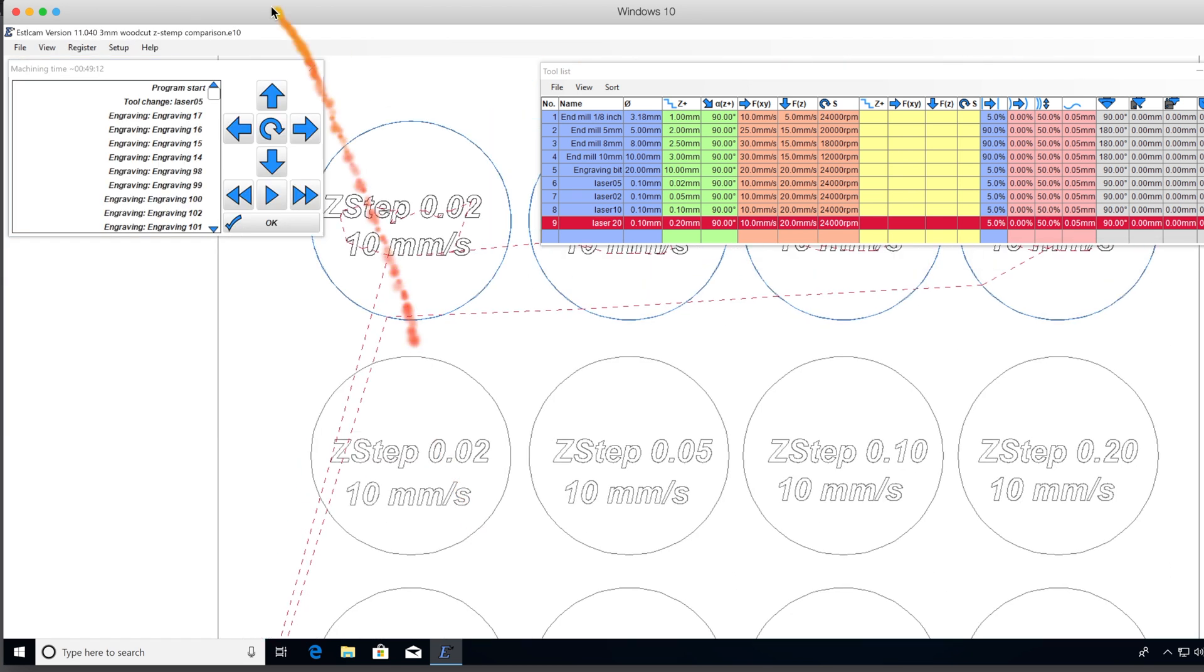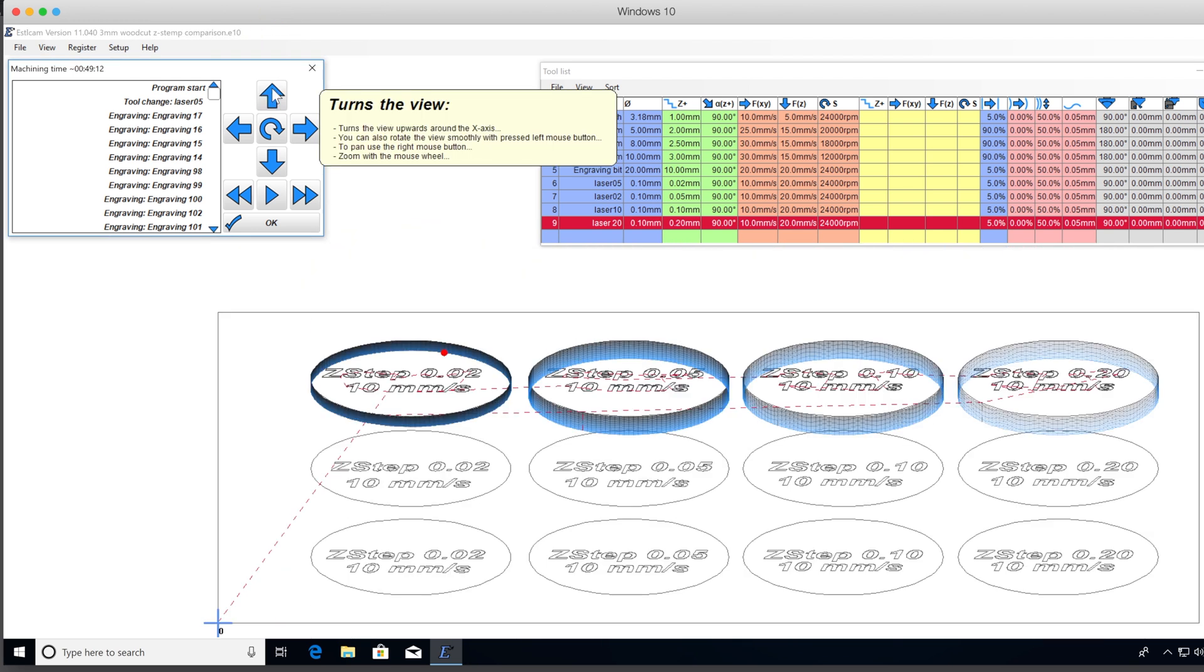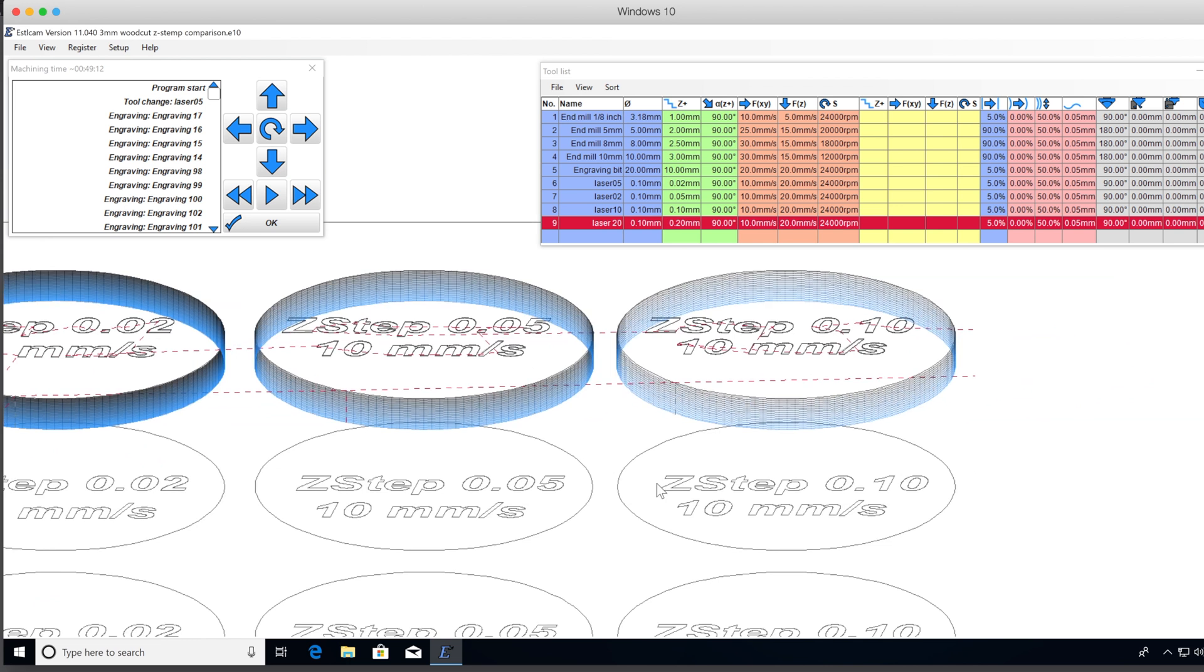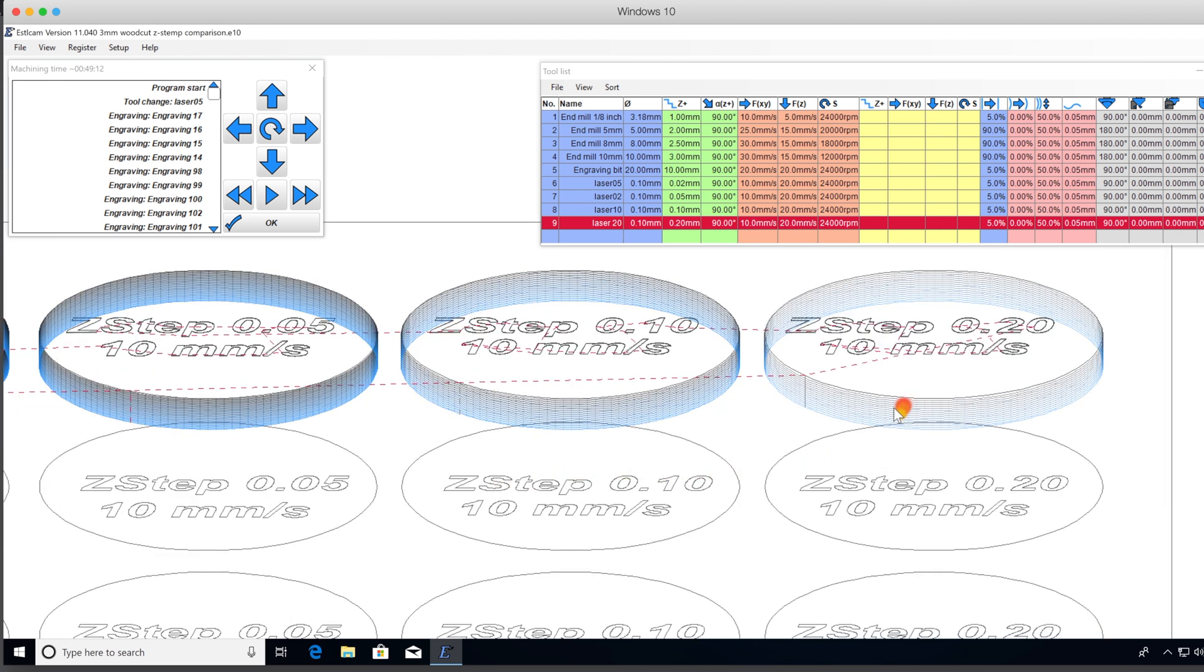Great. So let's take a look at this. We'll flip her over here a little bit and we can see that the first one is the densest Z-steps and the most number of Z-steps, and fewer and fewer on the last one. So we'll see where we can get with this.